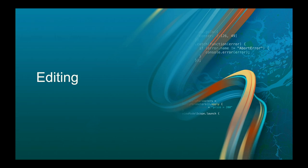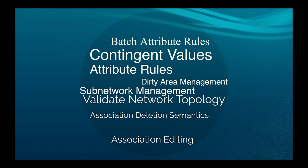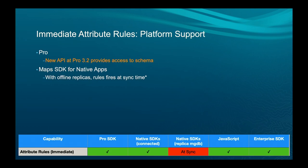Now editing. Immediate attribute rules are the rules that fire when edits are made — a calculation rule updates a value in the feature, a constraint rule does a check. They're all written using Arcade and run cross-platform. In Pro, we added a new API at 3.2 to provide access to the schema so you can check what attribute rules are defined. With native apps, if you take a replica offline, rules fire at sync time — we're not yet executing attribute rules in the field, that's on the way.